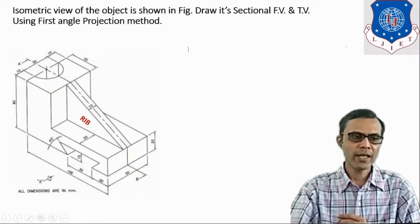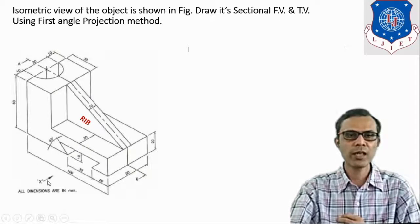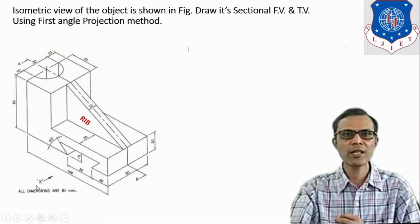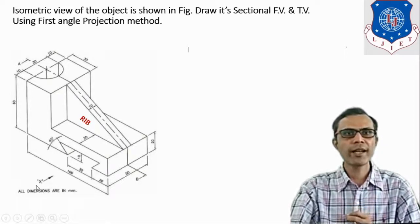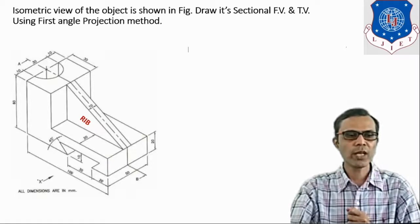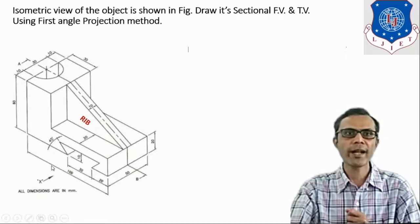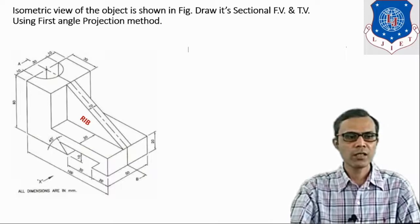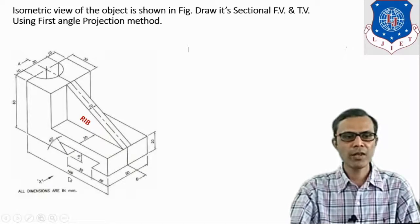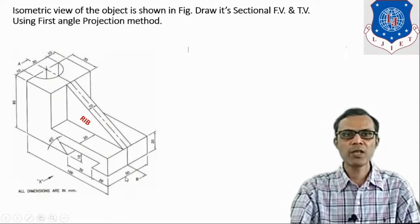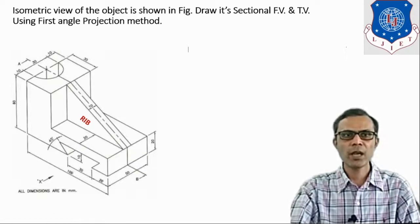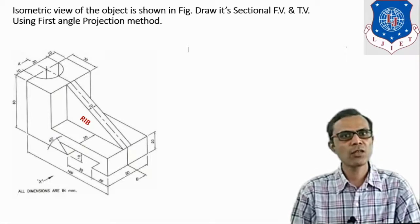This symbol of an arrow and a capital letter indicates the direction for the front view observer. Looking from this direction, we have to decide three main dimensions of the object: length, width, and height. Looking from this direction, the total length of the object is 100 mm, the total width is 50 mm, and the total height is 60 mm. These are the three main dimensions of the object.